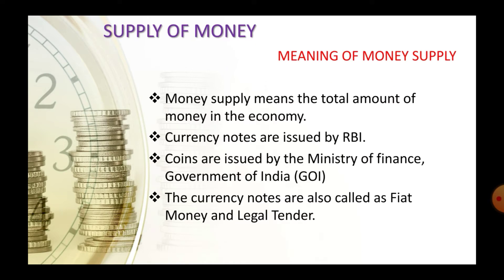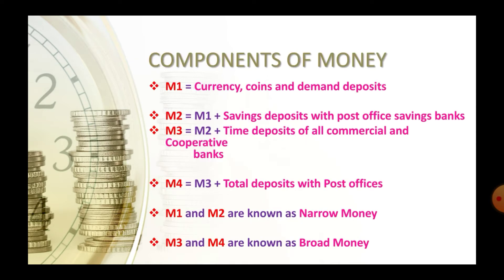Money supply means the total amount of money in an economy. The total stock of money circulating in an economy is called money supply. The circulating money involves paper currencies, printed notes, money in deposit accounts, and other liquid assets. RBI calculates four concepts of money supply in India.